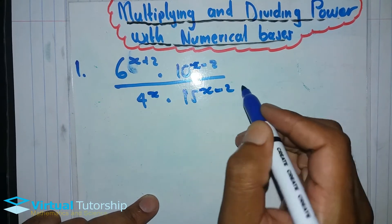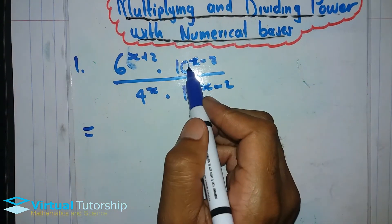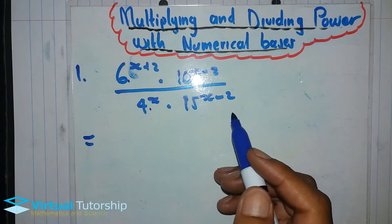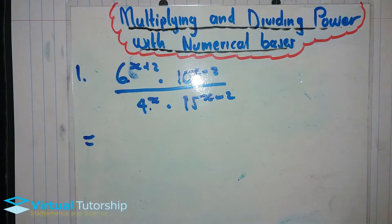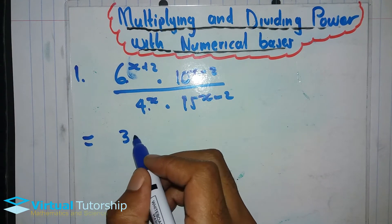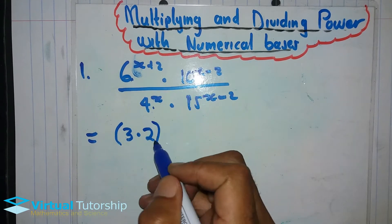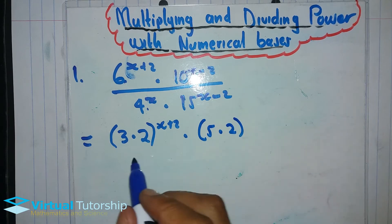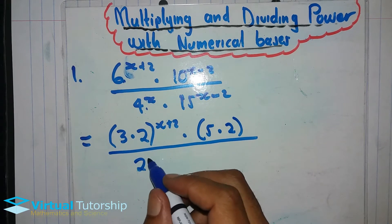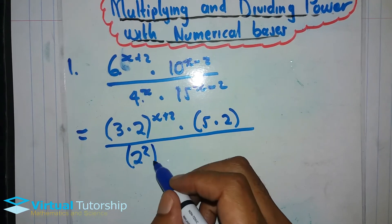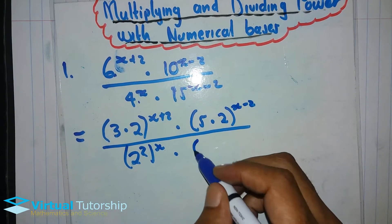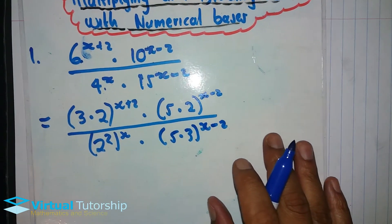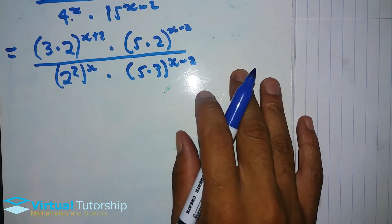The first step in any problem involving multiplication and division of powers is to convert all your bases to prime bases. So 6 is rewritten as 3 times 2, to the x plus 2. Then the 4 is rewritten as 2 squared, to the x minus 2. And 15 is rewritten as 5 times 3, to the x minus 2.